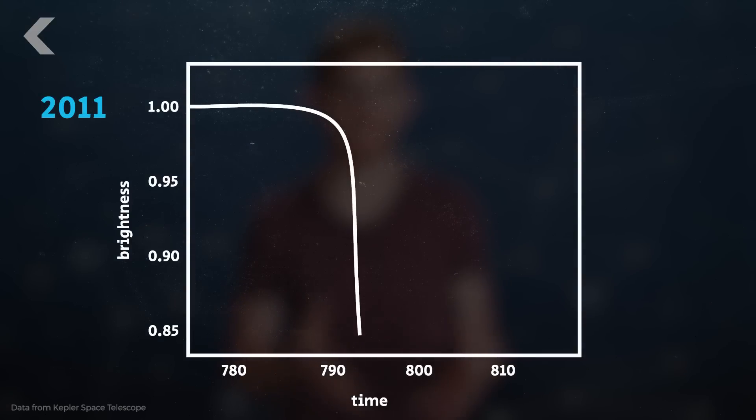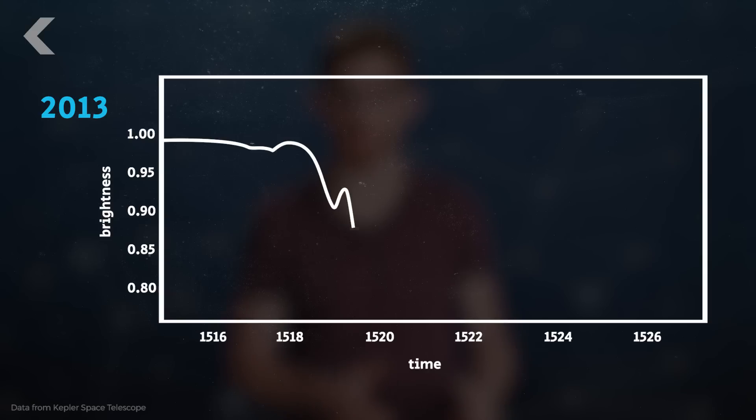First, a refresher on why Tabby's star is so mysterious. In 2011 the Kepler Space Telescope observed its light dimmed briefly by 15%. Almost two years later it temporarily dimmed again, this time by about 22%.